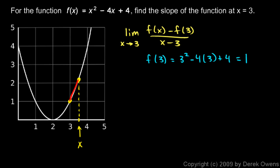So this original expression here is the limit as x approaches 3 of f(x), which is x squared minus 4x plus 4 minus f(3), which we said is 1. So it's minus 1 over x minus 3. Now if we take a value for 3 and plug it in on the top and the bottom, we get 0 over 0. We can't do that. But we can try to simplify this expression.